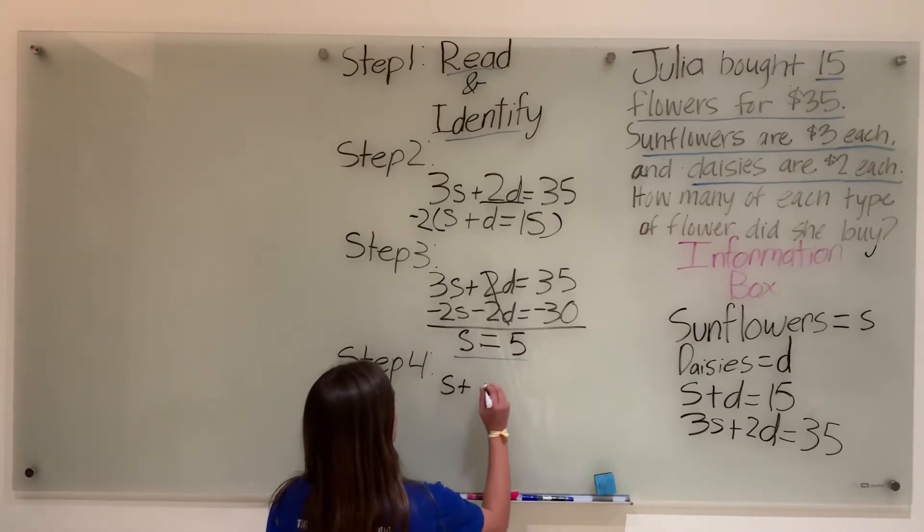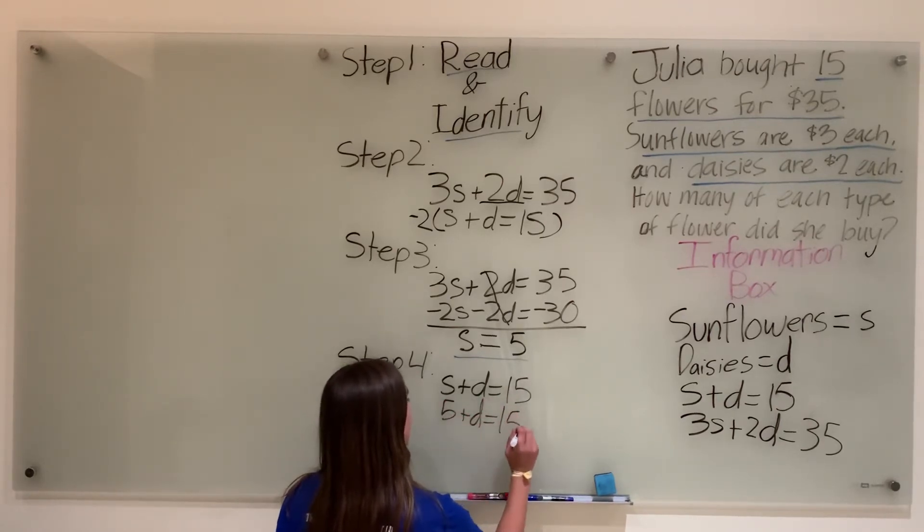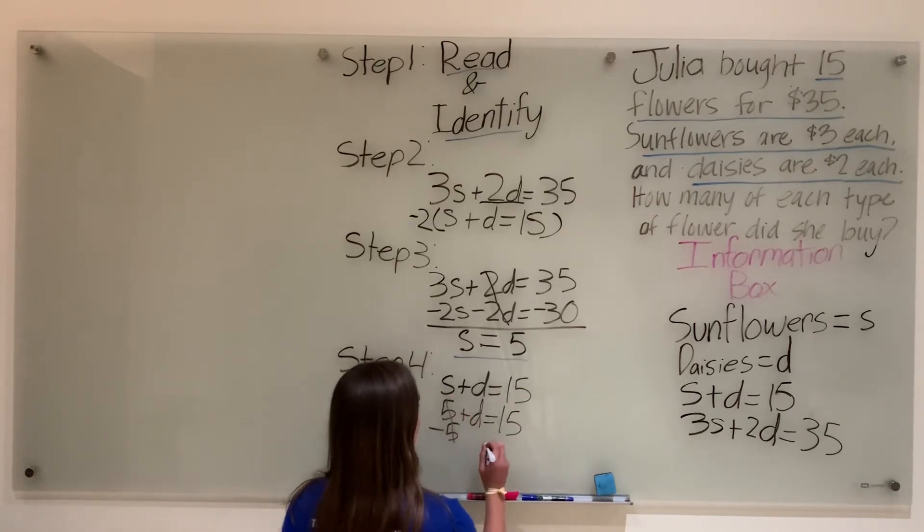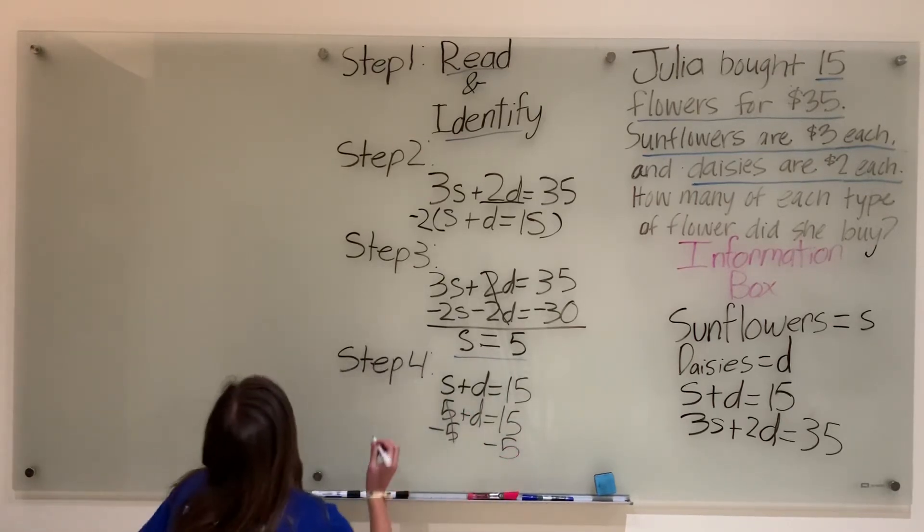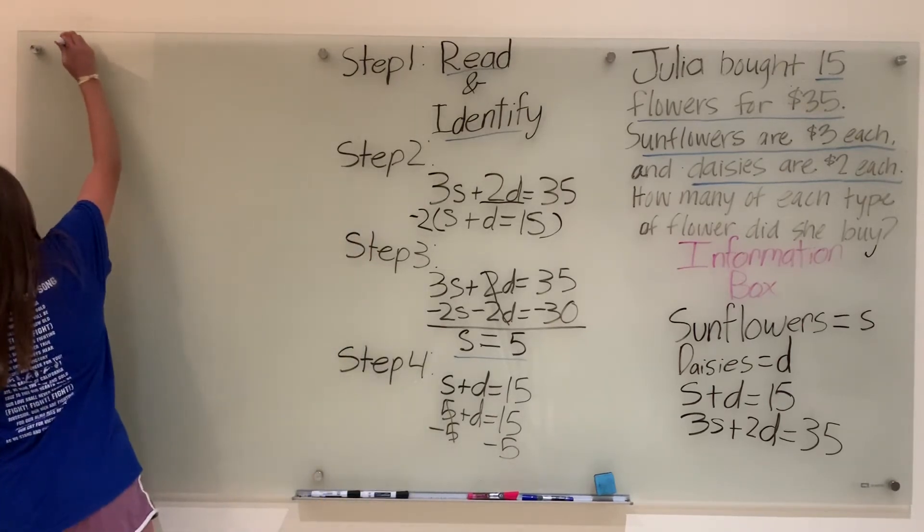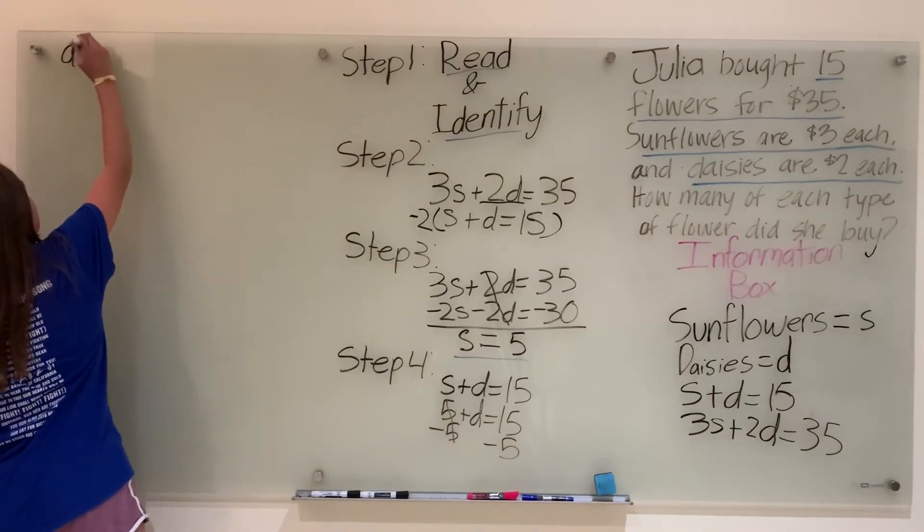So we have s plus d equals 15. Writing our original equation, plugging in 5, we get 5 plus d equals 15. Now subtracting 5 from each side, we get up top here d equals 10.